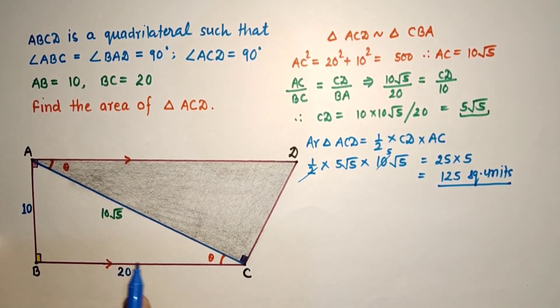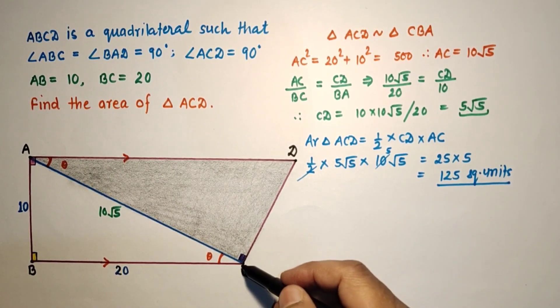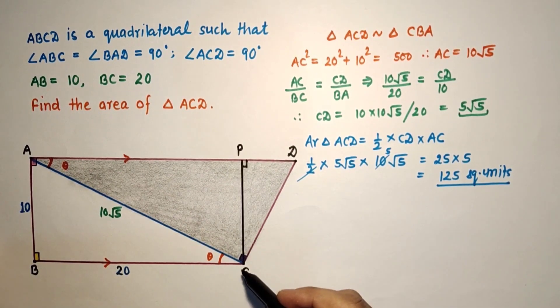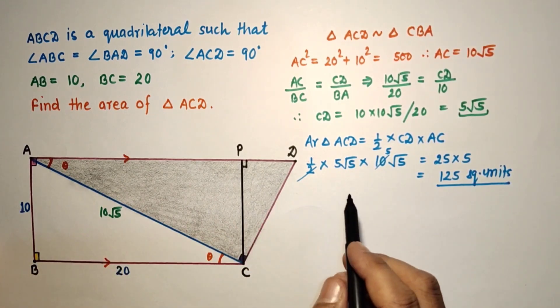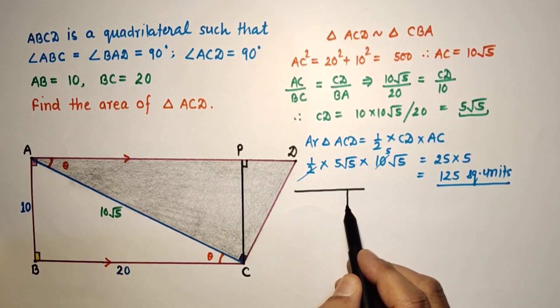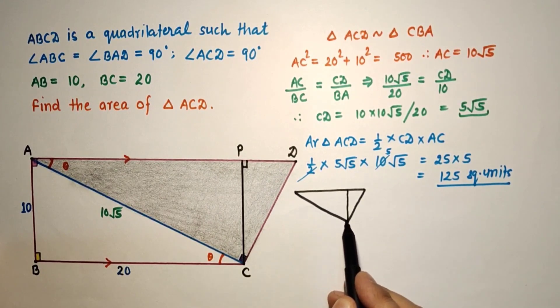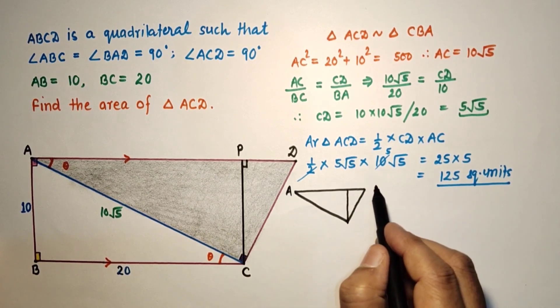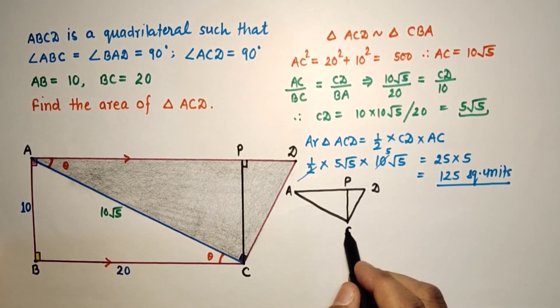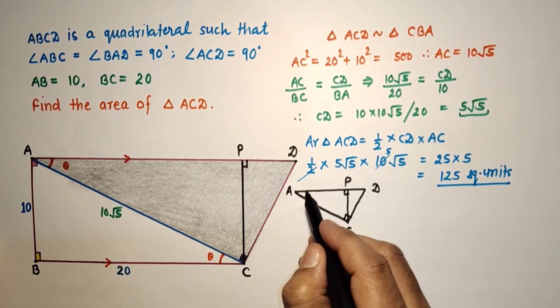We can do it by a second method, again using similarity. If we draw a perpendicular from this vertex C to AD, so we have drawn CP perpendicular to AD. These two triangles now we are going to prove similar. This is D, this is P, this is C. This angle is 90, and this is 90. This angle is X, let us suppose.